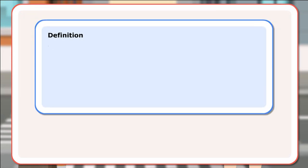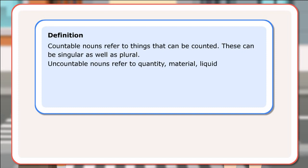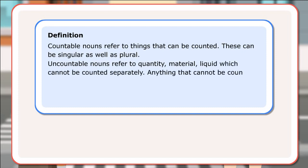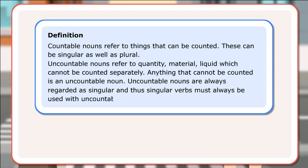Definition: Countable nouns refer to things that can be counted; these can be singular as well as plural. Uncountable nouns refer to quantity, material, or liquid which cannot be counted separately. Anything that cannot be counted is an uncountable noun. Uncountable nouns are always regarded as singular and thus singular verbs must always be used with uncountable nouns.